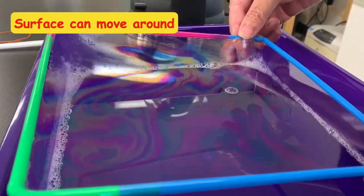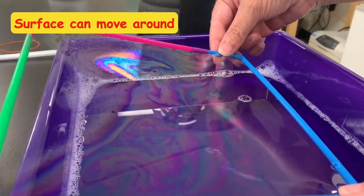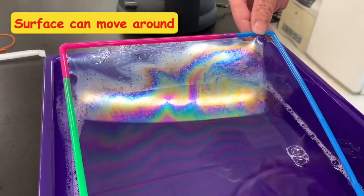First, just make the membrane and observe it. You can see all these colors that are swirling around just showing that a membrane can also move around.